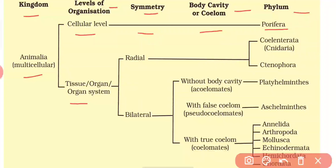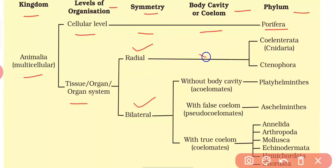At the tissue-organ or organ-system level of organization, organisms have two types of symmetry: radial symmetry and bilateral symmetry. Those with radial symmetry do not have any type of body cavity — they are acoelomate — and in this group we have two phyla: Cnidaria and Ctenophora.